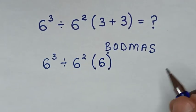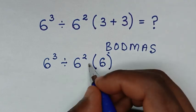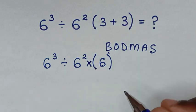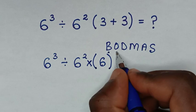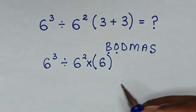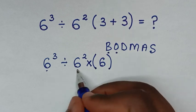Then in the next step, between 6 power 2 and 6 inside the bracket, we have multiplication. After dealing with the bracket, we deal with the order or exponents. In here we have 6 power 3 and 6 power 2.